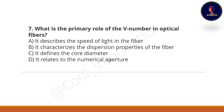Next question: What is the primary role of the V number in optical fiber? Option A: it describes the speed of light in the fiber. Option B: it characterizes the dispersion properties of the fiber. Option C: it defines the core diameter. Option D: it relates to the numerical aperture. The correct option is D — it relates to the numerical aperture.